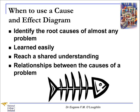So when do we use a cause and effect diagram? It can be used to help identify the root causes of almost any problem you can think of. This type of diagram is learned very easily by people and it's very useful in helping teams reach a shared understanding of a complicated problem. We can also use them to organise and analyse relationships between the causes of a problem. Basically, it's very good when something has gone wrong and we don't know what it is — we use our cause and effect diagram to help figure out what is causing the problem.